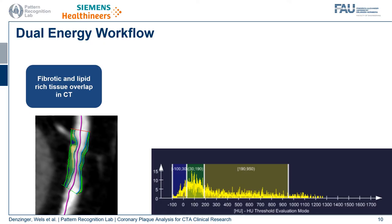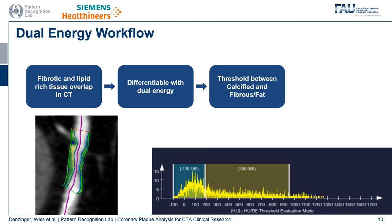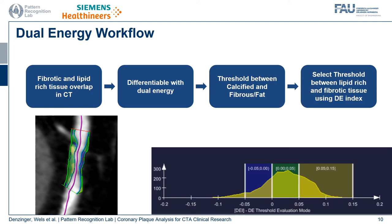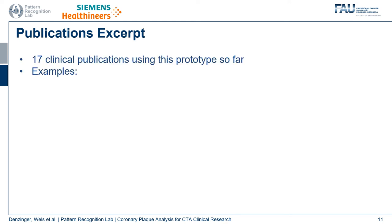Another topic of current and future research is the use of dual energy scans to better understand the tissue composition of plaque deposits. The motivation is that fibrotic and lipid-rich tissue can overlap in HU values in CT, but are differentiable using dual energy. You can apply a threshold between calcified and fibrous fatty tissue, and then analyze the lipid-rich and fibrotic tissue further using the dual energy index.